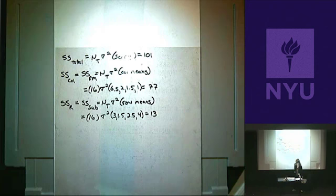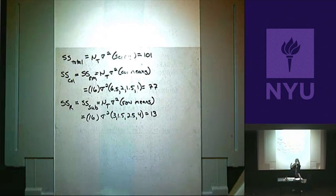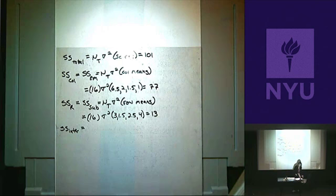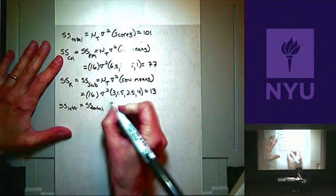Now what we need to calculate is the error term. There is no SS within here. It's going to be SS interaction — essentially the interaction between each person and the condition they're in. In a two-way ANOVA we had an interaction of two factors; here there's an interaction between the person factor and the condition factor. That's going to be our error term. We're going to change the name — he calls it SS interaction at first, but the name we'll use is SS residual, because it's SS total minus SSRM minus SS sub — it's what's left over.